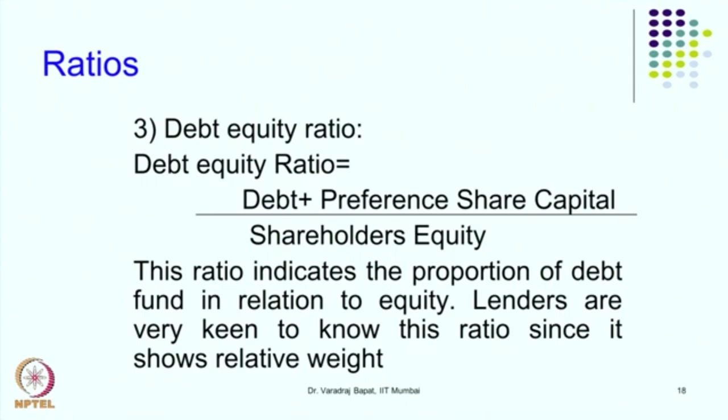When calculating the debt-equity ratio, in the numerator we take debt plus preference share capital. Normally shareholders' equity includes preference share capital, but for this ratio we deduct it from the denominator and add it to the numerator. This is because, though it is shareholders' funds, it is repayable within 5 to 10 years and has acquired a nature like debt. So we add debt plus preference capital and divide by shareholders' equity minus preference capital. Debt-equity ratio is very important — no loan is granted by any bank unless they calculate it.